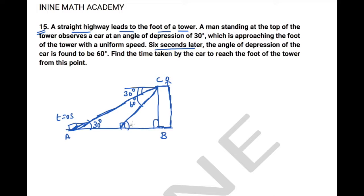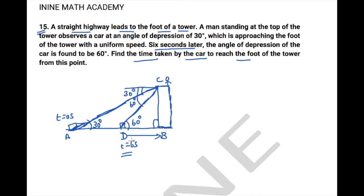The car is at point D, where the angle of depression is 60 degrees, and hence this angle is also 60 degrees. We call this point D at time t = 6 seconds. We need to find the time taken by the car to reach the foot of the tower B from this point D.